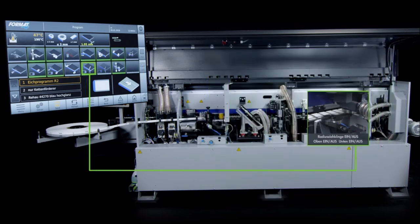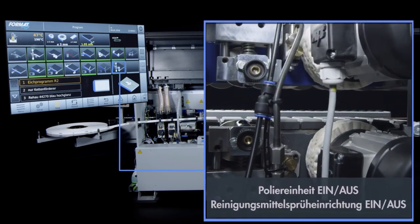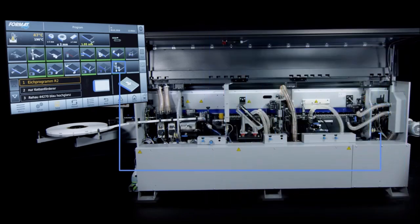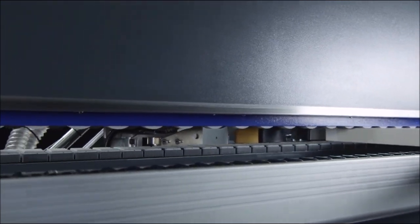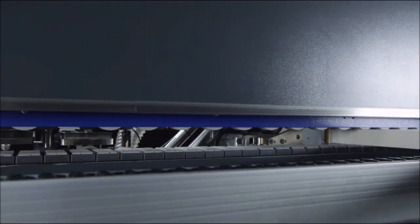The Edgebander Tempura F 445.03L is a top-notch solution for edge banding, offering efficiency, precision, and versatility for woodworking professionals seeking exceptional results.